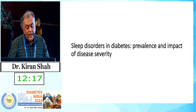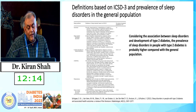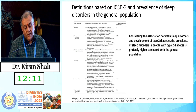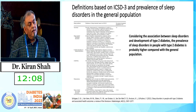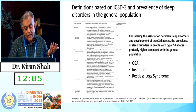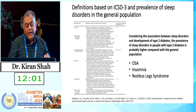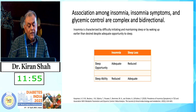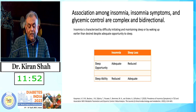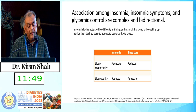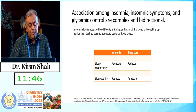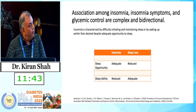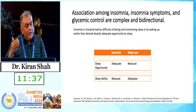Moving on to sleep disorders and diabetes — prevalence and impact of disease severity. Given the good association between sleep disorders and development of type 2 diabetes, the prevalence of obstructive sleep apnea, insomnia, and restless leg syndrome would definitely be higher in individuals with type 2 diabetes compared to the general population. Insomnia is characterized by difficulty initiating and maintaining sleep or waking up earlier than desired despite adequate opportunity to sleep. In insomnia patients, sleep opportunity is adequate but sleep ability is reduced, whereas individuals with sleep deprivation have reduced sleep opportunity but adequate sleep ability.